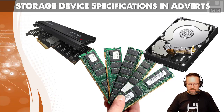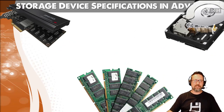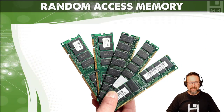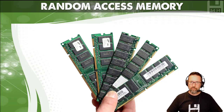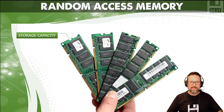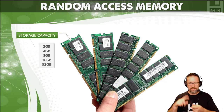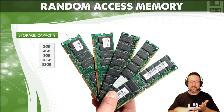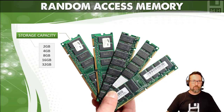Hey guys, device specifications — specifically storage device specifications in adverts. Let's have a look and see what this is all about. Starting off with RAM, random access memory, let's look at some specifications. The first and obvious one is storage capacity. We get RAM like 2 gigabytes, 4 gigabytes, 8 gigs, 16 gigs, 32 gigs — so we always look at the storage capacity of RAM.